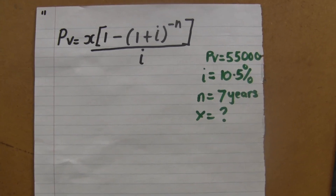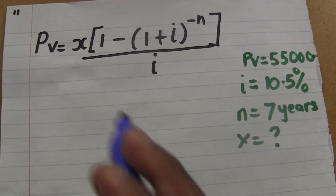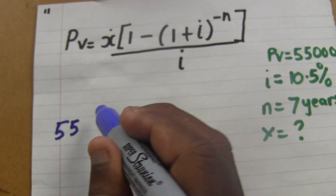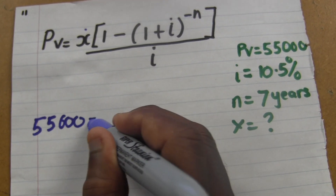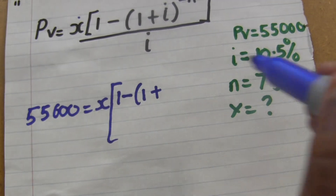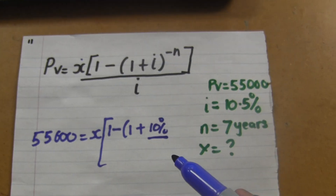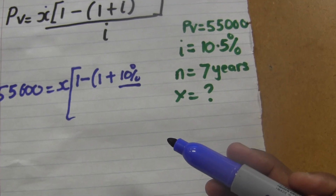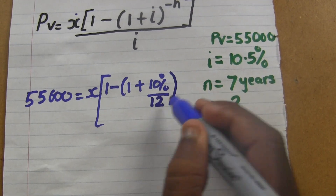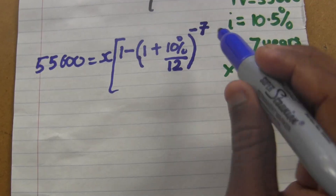So I already have my data written down. I'm going to plug them into the present value formula. X represents the monthly payment. I plug in 55,000, set it equal to X times the bracket: one minus, then one plus the interest rate — which is 10% — divided by 12 (since it's compounded monthly), raised to the negative power.